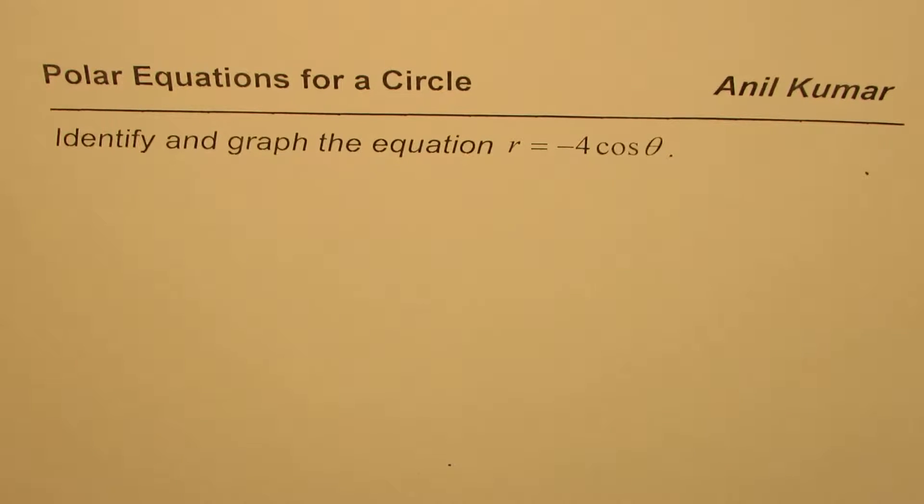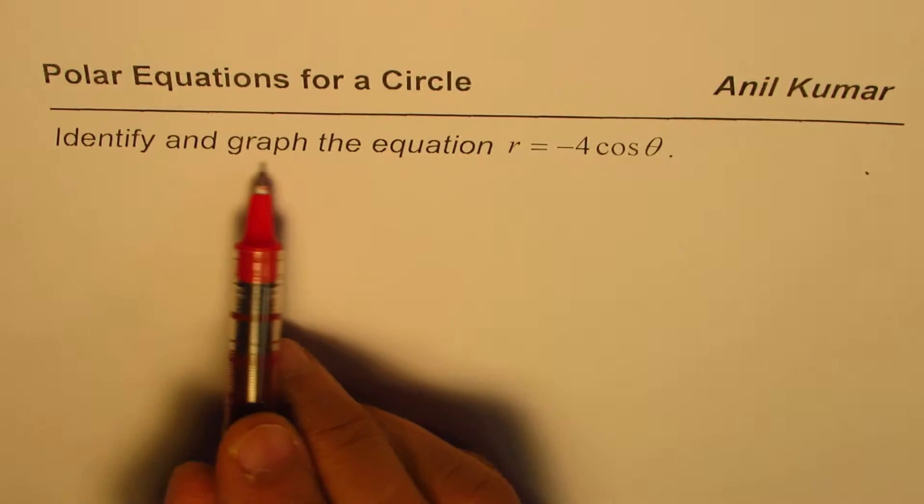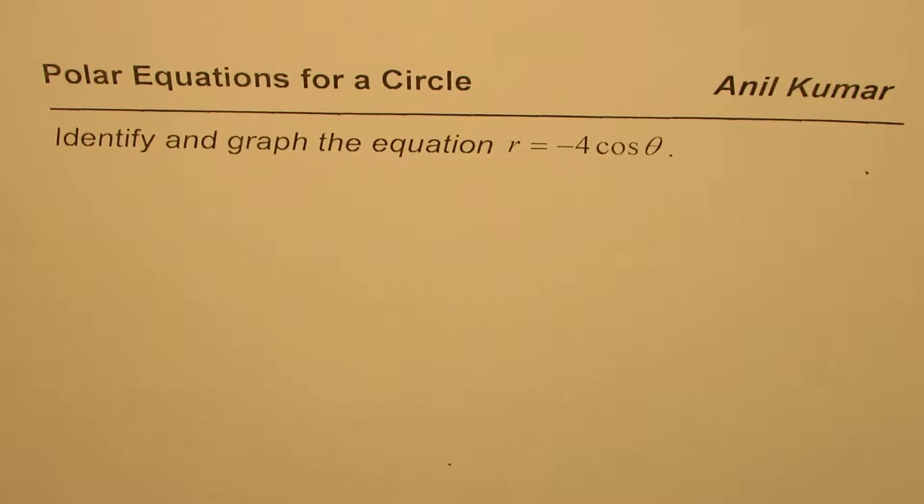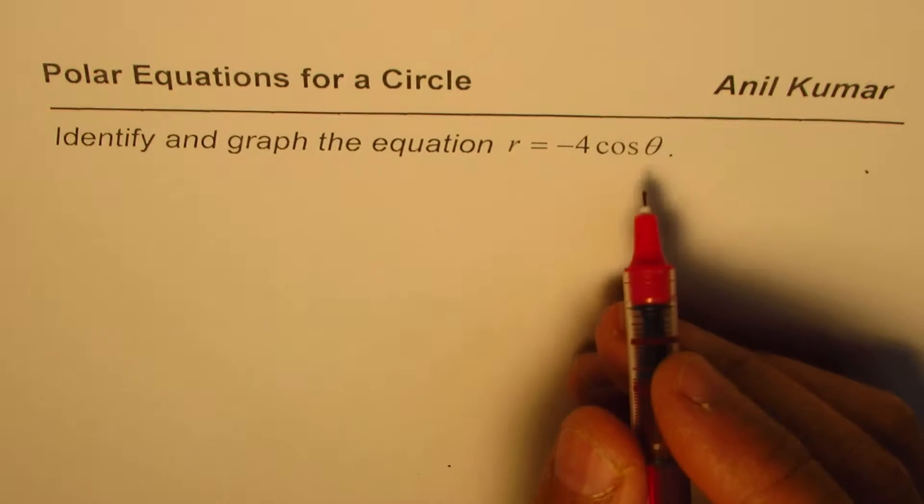I'm Anil Kumar. We are exploring polar equations for a circle. The question here is, identify and graph the equation r equals minus 4 cosine theta.